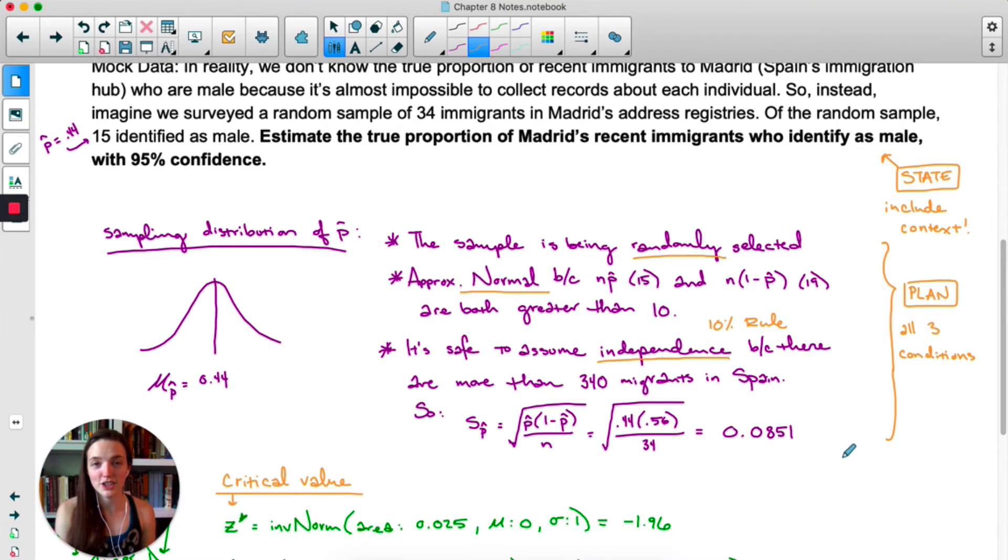If you find that one of the conditions isn't met, you don't do the rest of the problem. You would just write, unfortunately the distribution is not normal so we cannot continue. I know, your fingers are crossed hoping that that happens. It does happen sometimes. Technically this isn't part of plan but I would also draw a quick diagram just to jog your memory and make sure that you're on the right track.